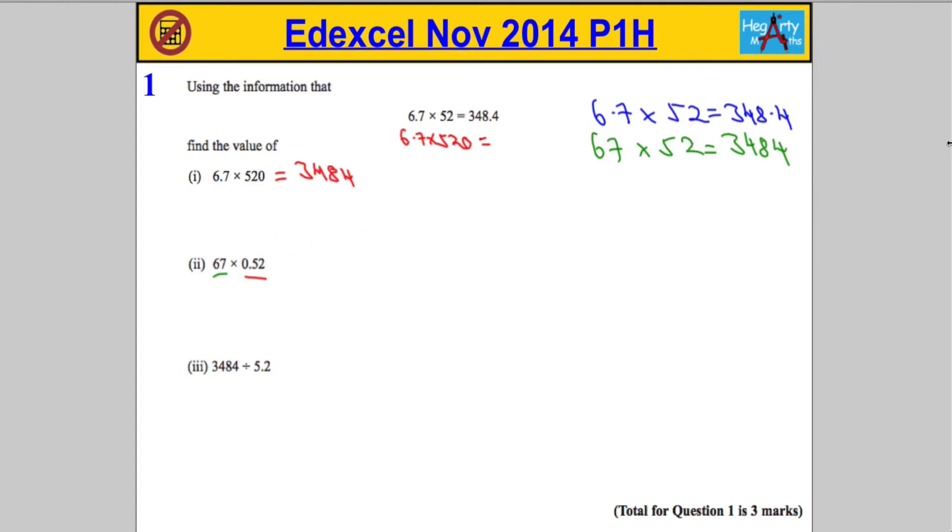And now I need to adjust the 52 so that we get 0.52. So I'm going to leave the 67 alone, and if I was to multiply that by say 5.2, I'm going to get an answer that's 10 times smaller: 348.4.